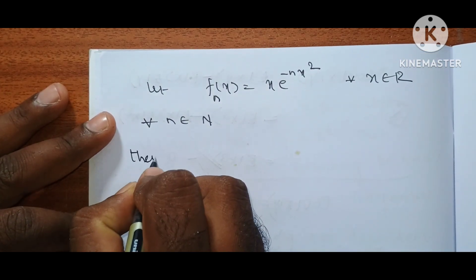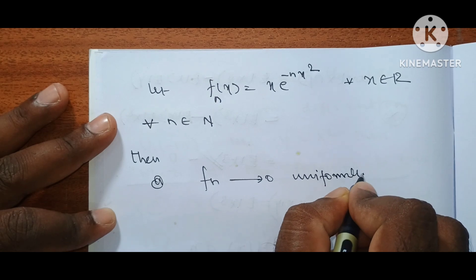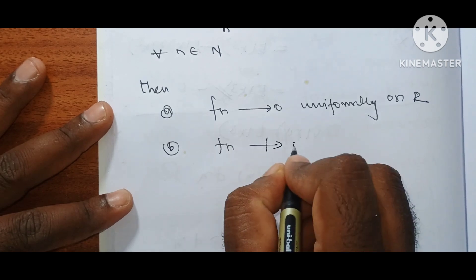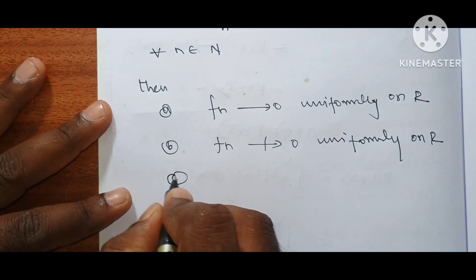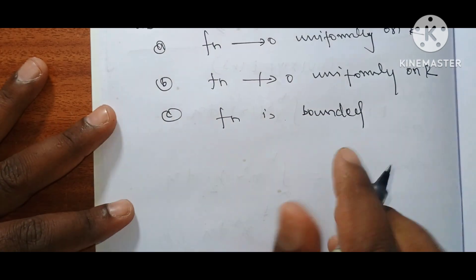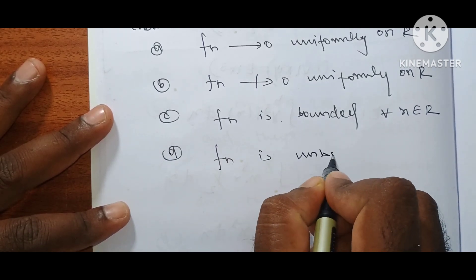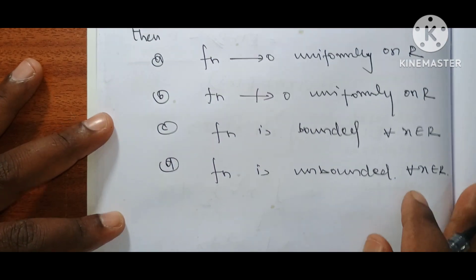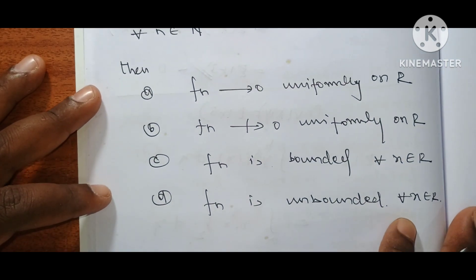Then: Option A — f_n converges to 0 uniformly on R. Option B — f_n does not converge to 0 uniformly. Option C — f_n is bounded for every x belongs to R. Option D — f_n is unbounded for every x belongs to R. So f_n(x) is defined as x·e^(-n·x²), x belongs to R, for any n belonging to the natural numbers. This is a sequence of functions.